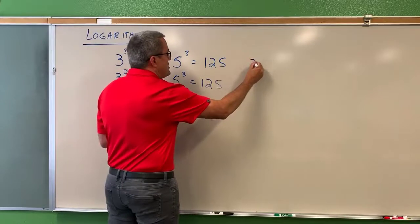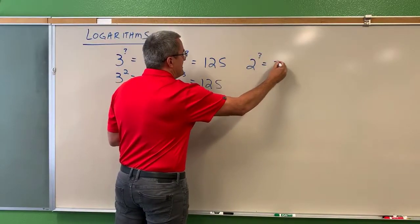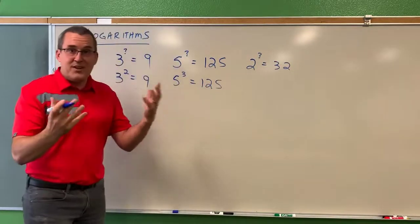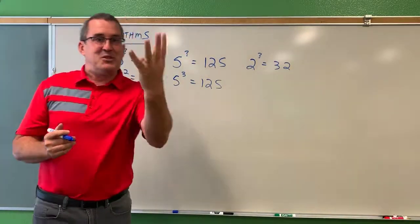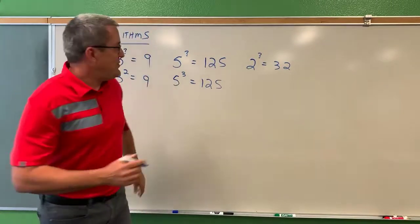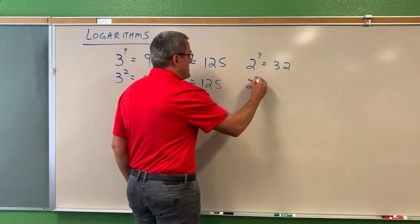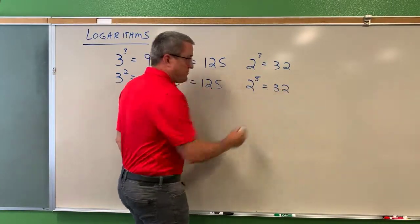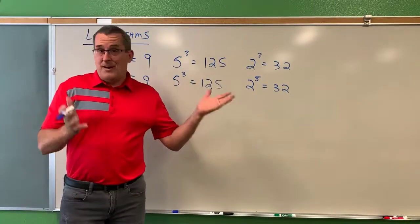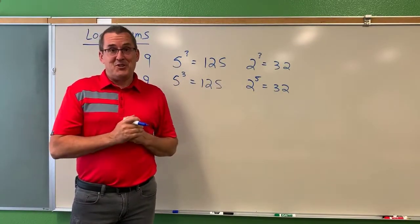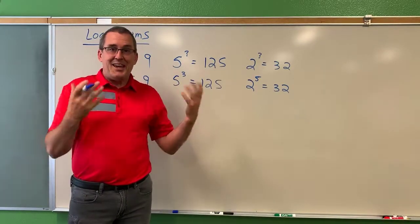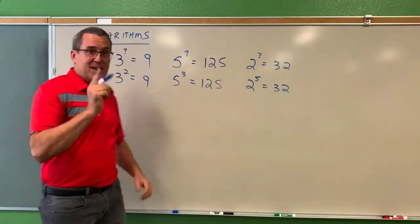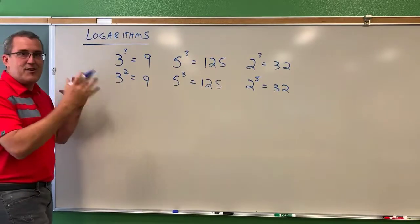Or suppose you had two raised to a mystery power is 32 and you want to figure out the mystery power. Two times two is four, times two is eight, times two is 16, times two would be 32. So we know that two to the fifth power is 32. So about 500 years ago, a mathematician named John Napier was thinking about these kinds of things for a reason that he needed. And he made a way of thinking about it that involved logarithms, but it kind of evolved like this.